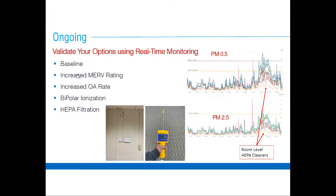First we established a baseline. Then we looked at what effects increasing a MERV rating on a filter path could have, what effects increasing the outside air fraction could have, what effects we could measure from improvement in IAQ from bipolar ionization, and what effects we could measure from the improvement of HEPA filtration. These graphs show monitored particulate matter — PM 0.5 micron and 2.5 micron — and demonstrate a noticeable, measurable impact from room-level HEPA cleaners. The school system opted to go the way of room-level HEPA cleaners.